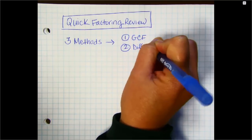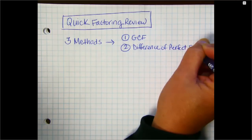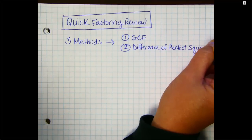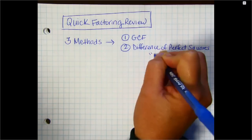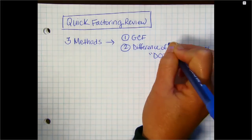The second is the difference of perfect squares. You'll often hear us refer to that as DOTS for difference of two perfect squares. That's where DOTS comes from.